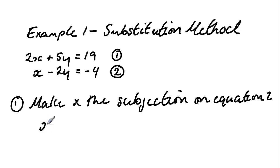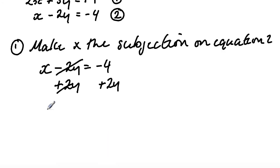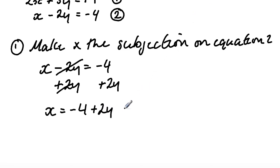So we have x minus 2y equals minus 4. To make x the subject, I'm going to add 2y to both sides. So minus 2y plus 2y cancels out to give us zero, and we add 2y to the right side as well. What we have is x is equal to negative 4 plus 2y. I'll label this as equation two.